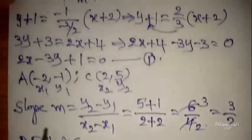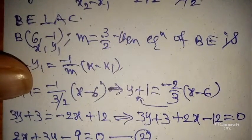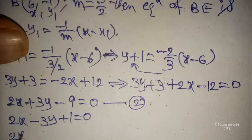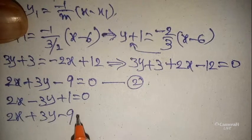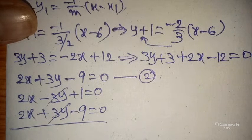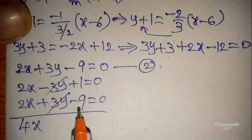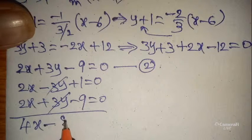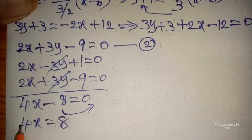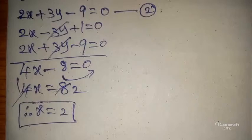Solving Equation 1 and Equation 2 simultaneously: Equation 1 is 2x − 3y + 1 = 0 and Equation 2 is 2x + 3y − 9 = 0. Adding both: 4x + (1 − 9) = 0, giving 4x − 8 = 0, so 4x = 8, therefore x = 2.